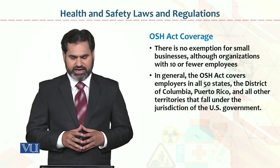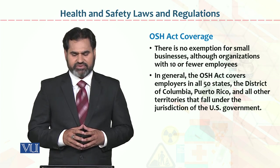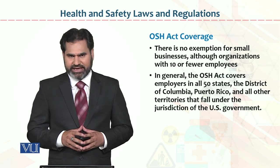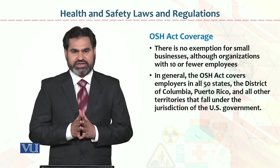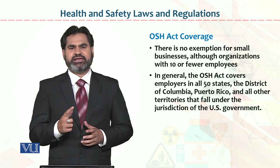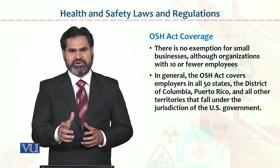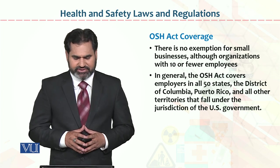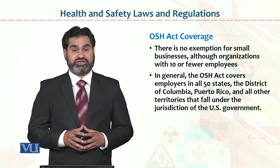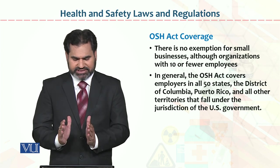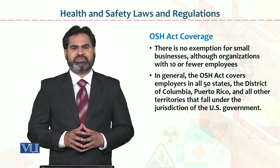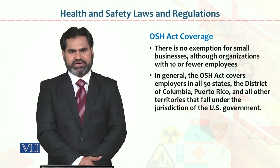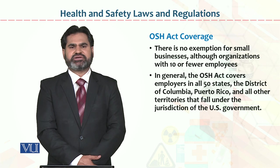There is no exemption for small businesses or organizations with 10 or fewer employees. Even if there is only one employee and one employer, the act is still applicable. In general, the Occupational Safety and Health Act covers employers in all 50 states of the United States of America. This US example is given specifically because the act was first developed there in 1970 and subsequently executed.